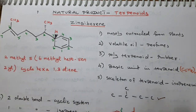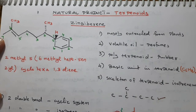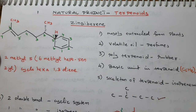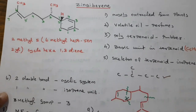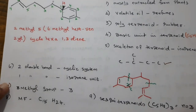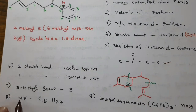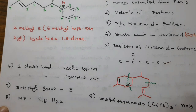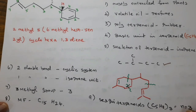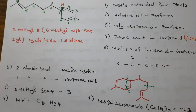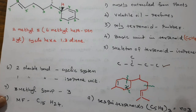Now we are going to talk about the molecular formula C15H24. We are going to talk about the carbon and hydrogen, and also the functional groups.